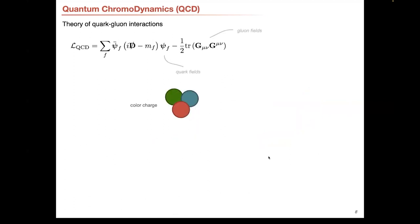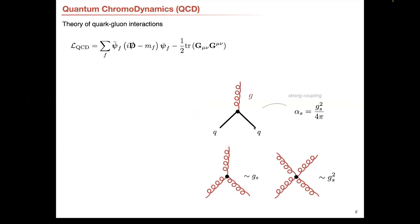Quantum chromodynamics naively looks very similar — here we have quark fields which interact with the gluon fields via this coupling. But the differences come in a couple of ways. Electrons have positive and negative charge, whereas quark fields have a color charge, of which there are three general colors we call red, green, and blue. Because of this, you can have interactions of quarks with the gluons as before, but not just the quarks — the gluons themselves also have this color charge, unlike electrodynamics where the photon is neutral. So you can have self-interactions of gluons: either three gluons coming together or four gluons coming together.